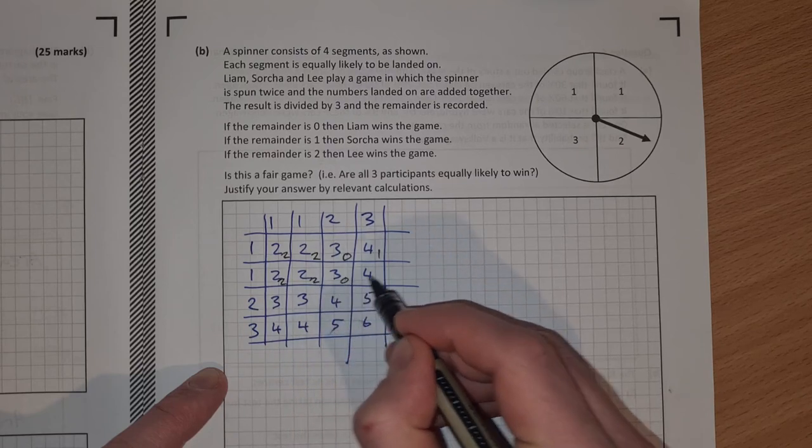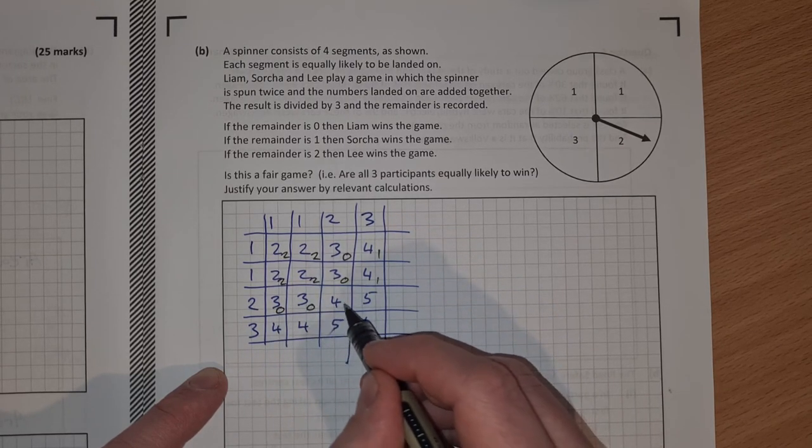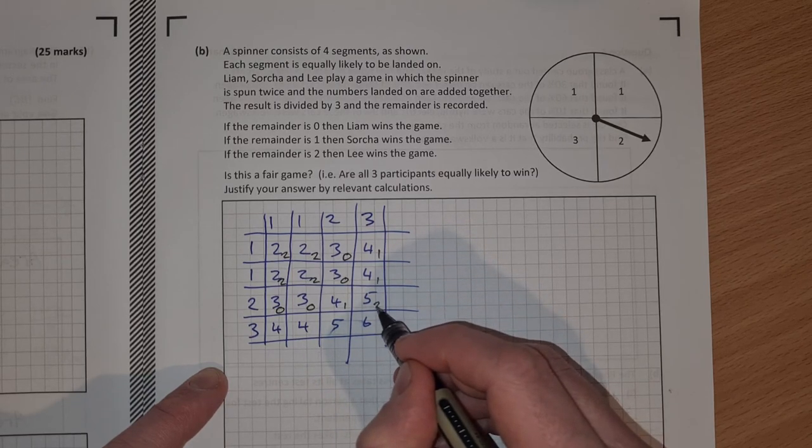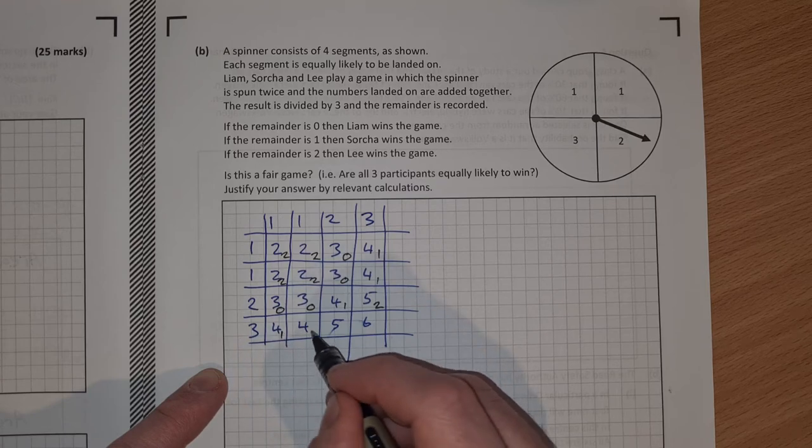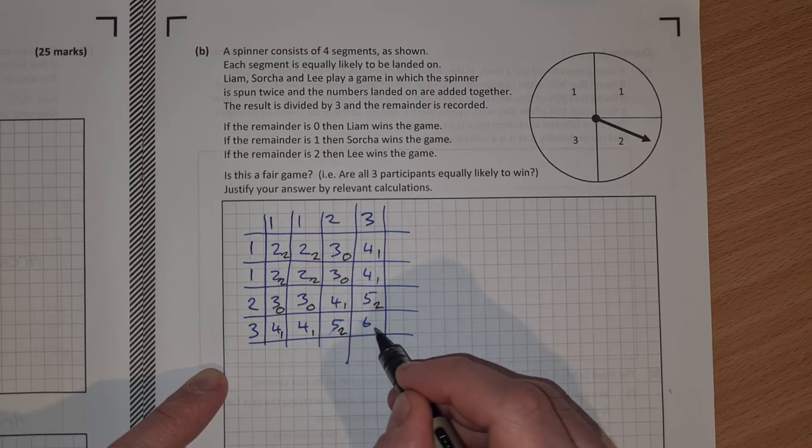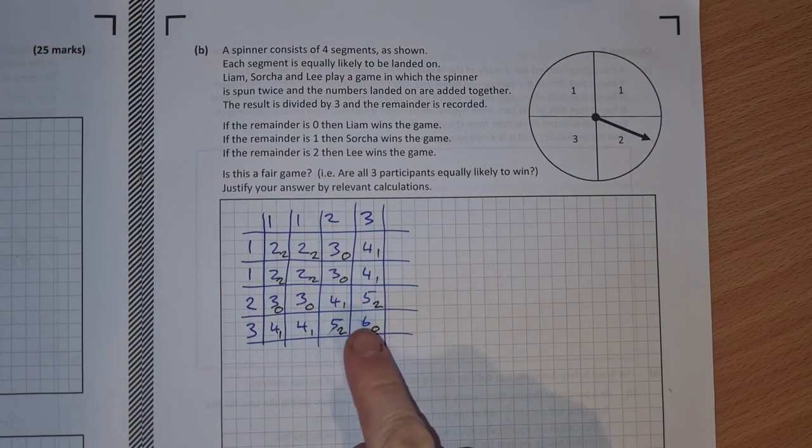Remainder here will be 2, 2, 0, 1. Remainder 0, remainder 0, remainder 1. 3 into 5 goes once, remainder 2. 3 into 4 once, remainder 1, remainder 1, remainder 2 and remainder 0. So those black numbers there are my remainders.